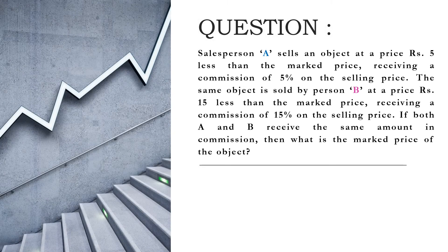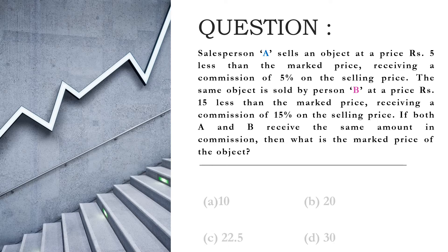Salesperson A sells an object at a price Rs 5 less than the marked price, receiving a commission of 5% on the selling price. The same object is sold by Salesperson B at a price Rs 15 less than the marked price, receiving a commission of 15% on the selling price. If both A and B receive the same amount in commission, then what is the marked price of the object?